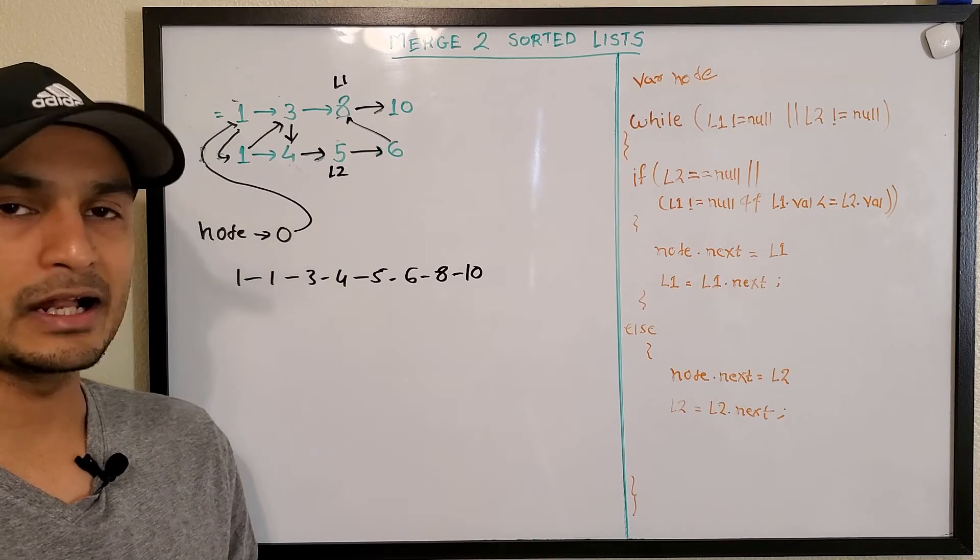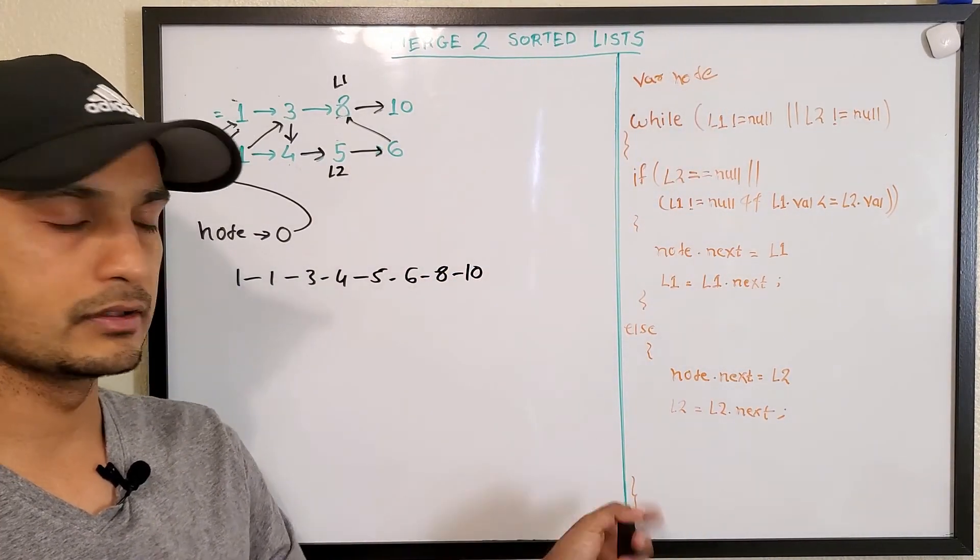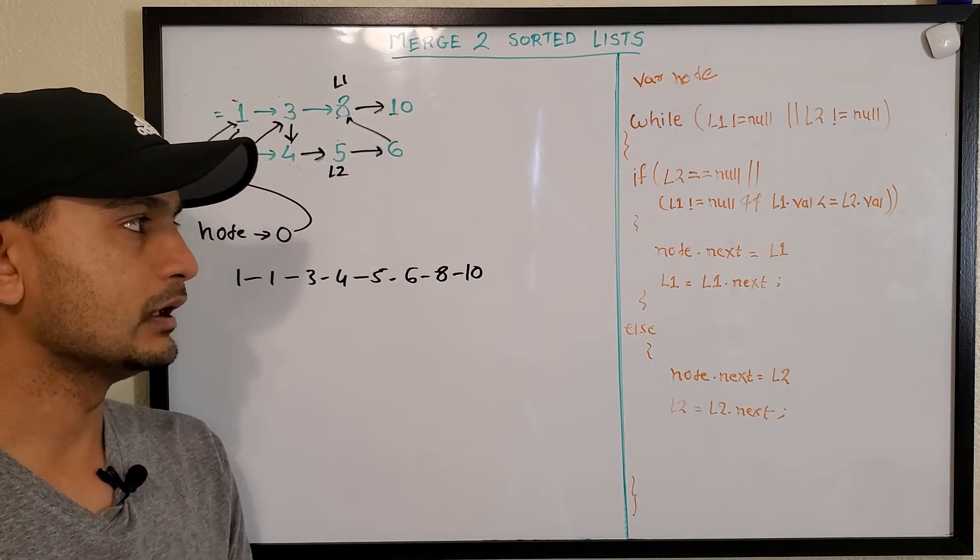Let's look at the actual code, look at this dummy node and how we return the list and everything. Let's run the code. But before we go there, I just want to mention...